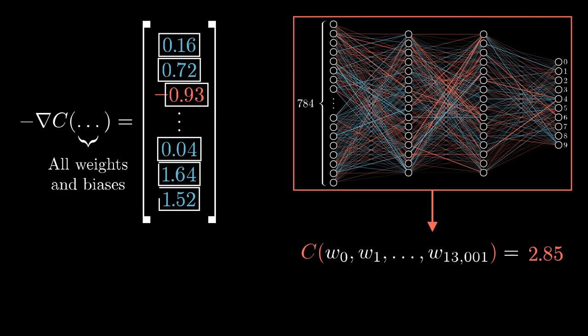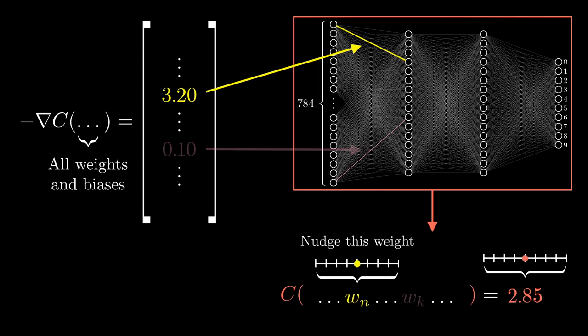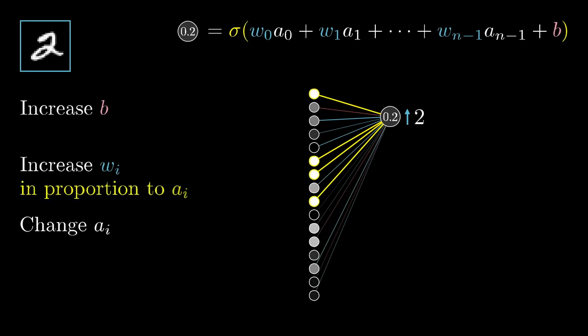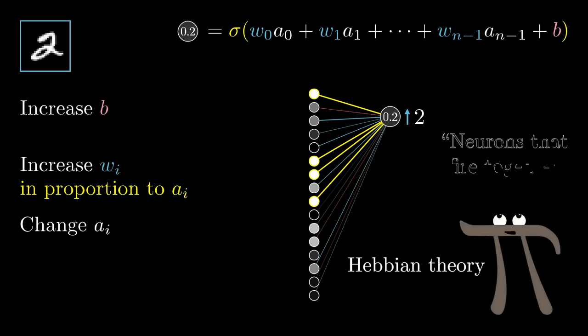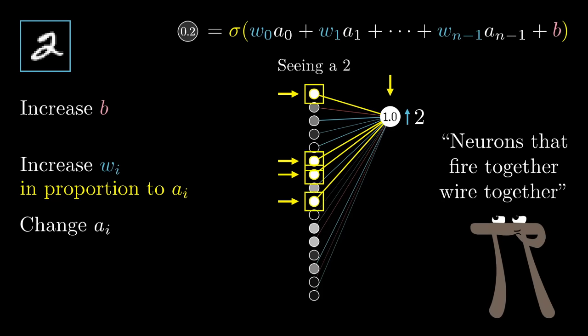Remember, when we talk about gradient descent, we don't just care about whether each component should get nudged up or down, we care about which ones give you the most bang for your buck. This by the way is at least somewhat reminiscent of a theory in neuroscience for how biological networks of neurons learn, Hebbian theory, often summed up in the phrase, neurons that fire together wire together. Here, the biggest increases to weights, the biggest strengthening of connections, happens between neurons which are the most active and the ones which we wish to become more active. In a sense, the neurons that are firing while seeing a two get more strongly linked to those firing when thinking about a two.